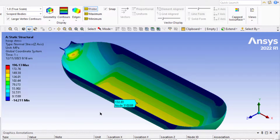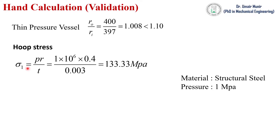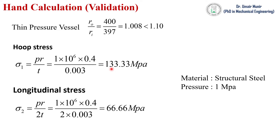Now we will compare our ANSYS results to hand calculations to validate our solution. For the hoop stress, the equation used is: pressure times radius divided by thickness of the pressure vessel. Pressure is 1 MPa, radius is 400 mm, and thickness is 3 mm. So the hoop stress is found to be 133 MPa. The longitudinal stress is found to be 66 MPa. Our hand calculations match the ANSYS results, so our solution has been validated.